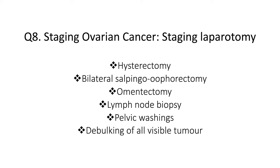Question 8: How do you stage ovarian cancer? Ovarian cancer is staged using the FIGO classification. Staging laparotomy is performed through a midline laparotomy and includes hysterectomy, bilateral salpingo-oophorectomy, omentectomy, lymph node biopsy, peritoneal biopsy, pelvic washings, and debulking of all visible tumour.